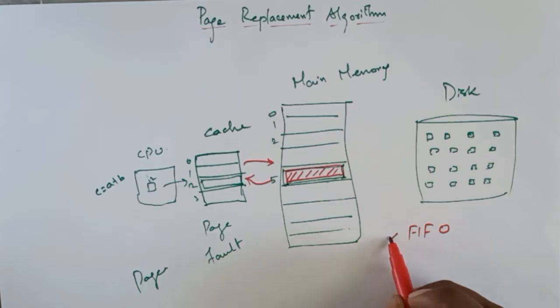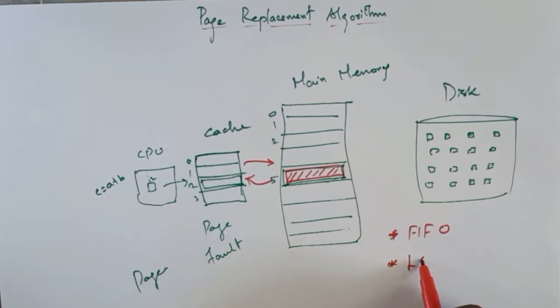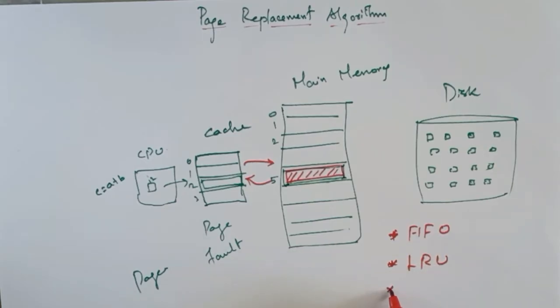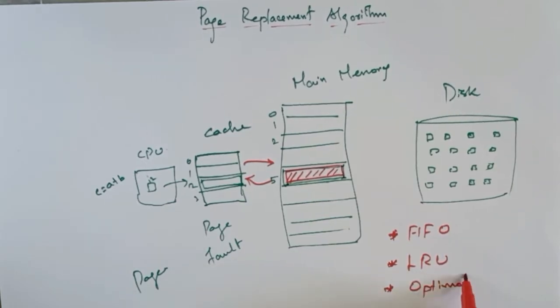FIFO — this is the algorithm. Next, LRU is the least recently used. Next, optimal. So these are the 3 page replacement algorithms. Here we will see the algorithm.